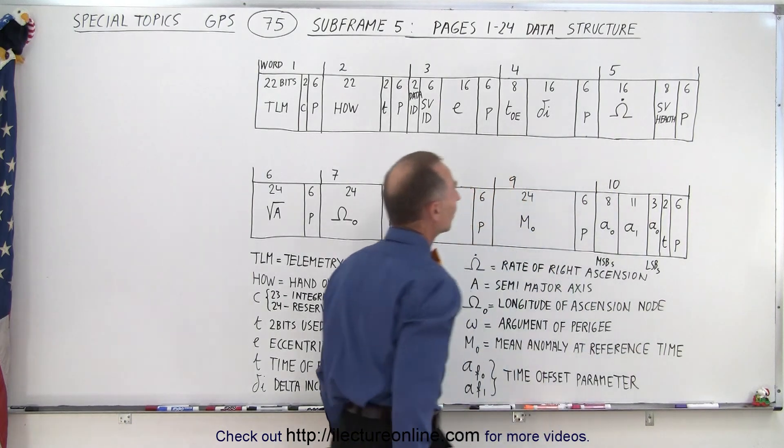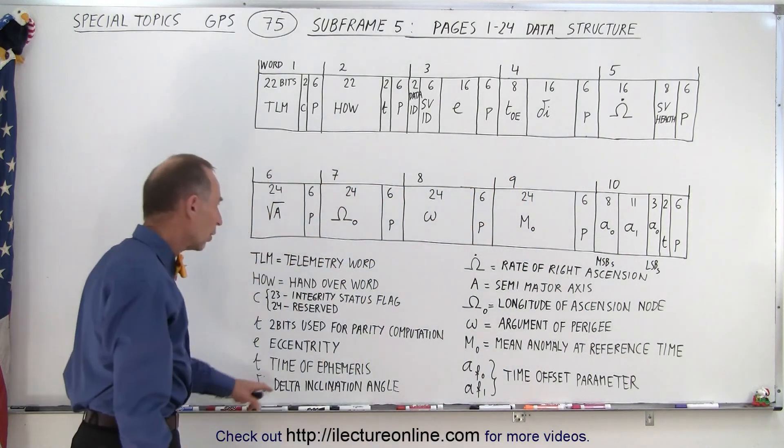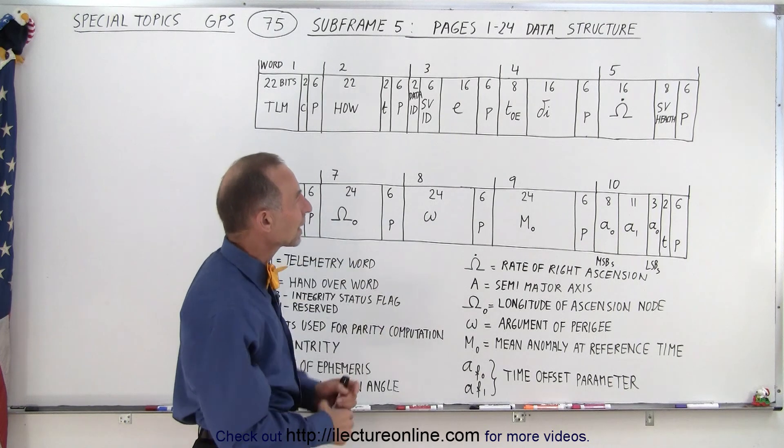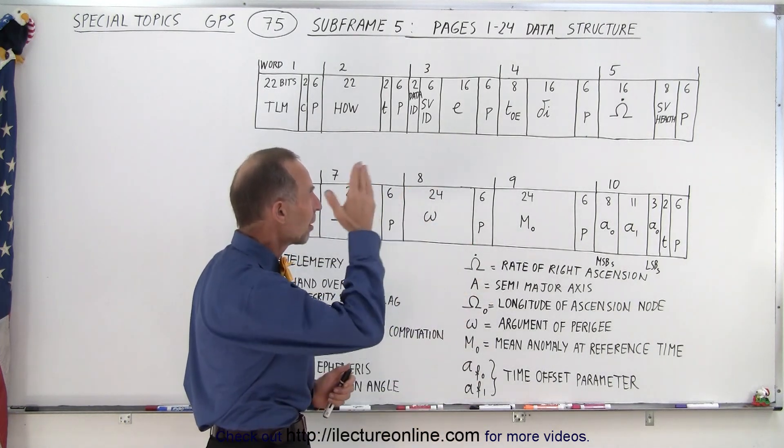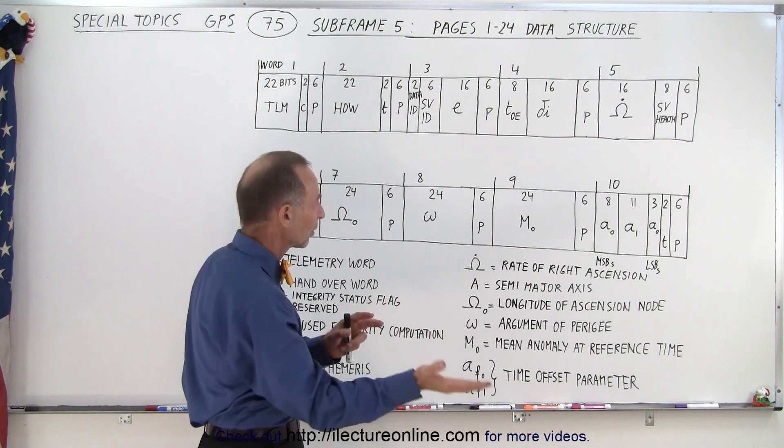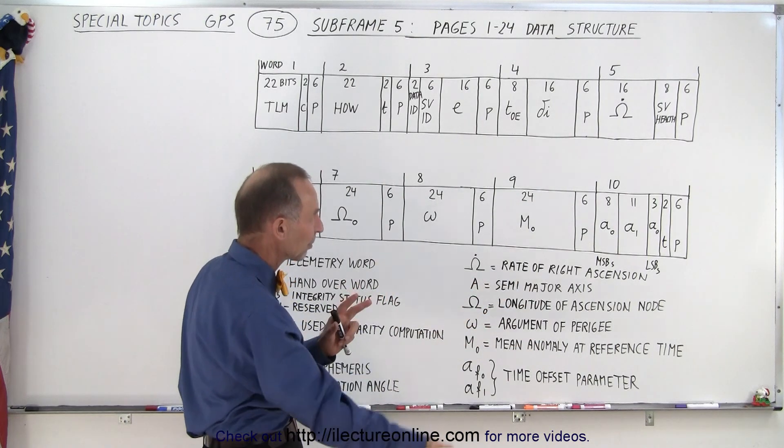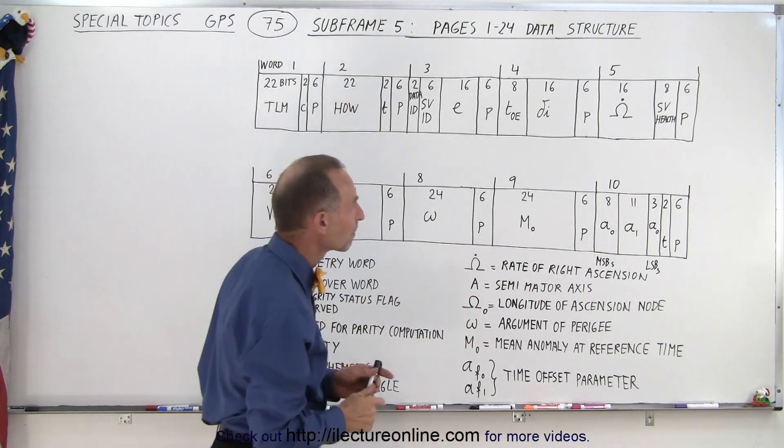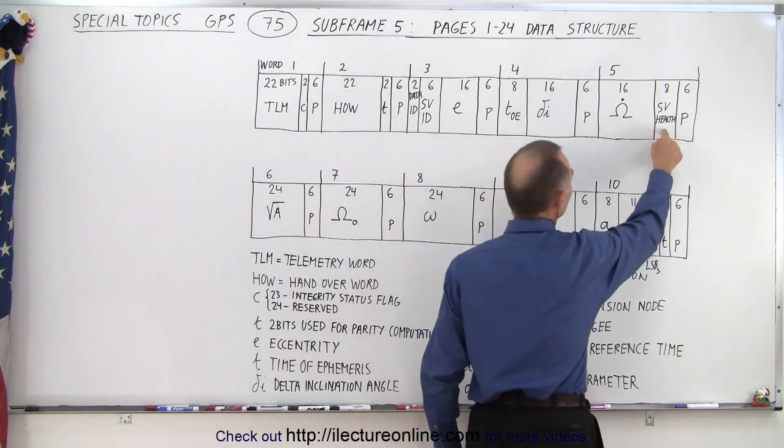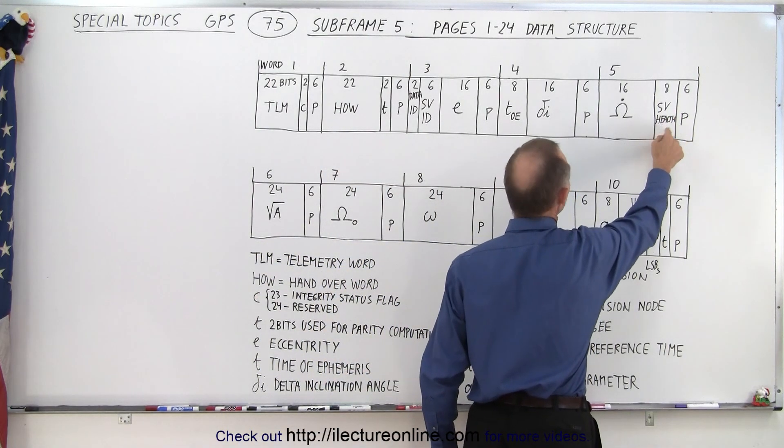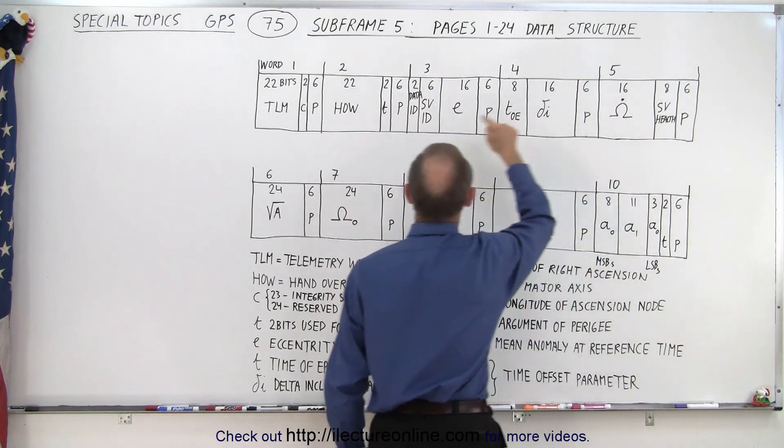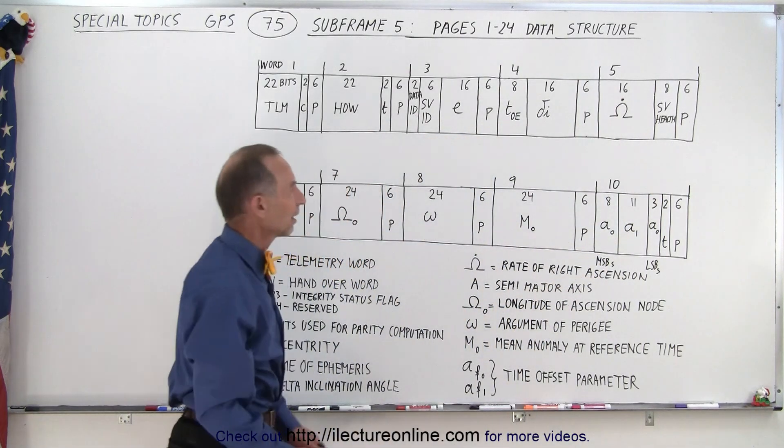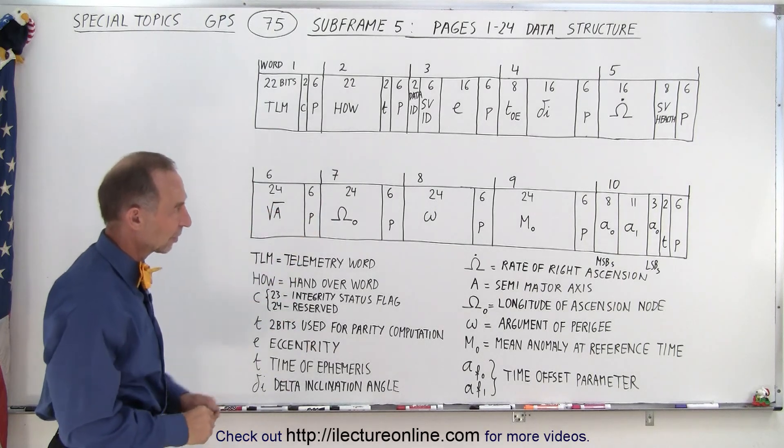The next word, word five, is what we call the rate of right ascension. So that's the rate at which we're moving away from the right ascension that tells you where the satellite is at based upon it coming up into the sky. And then the next eight bits give you some SV health information. So that is SV health information for the satellite that we're dealing with which is identified with the SVID here. And again the six parity bits.